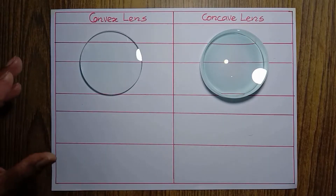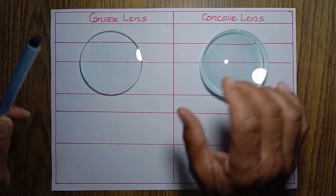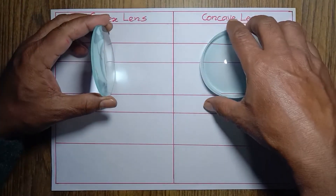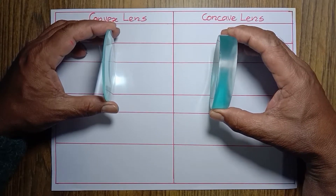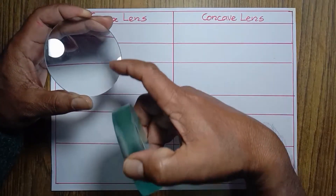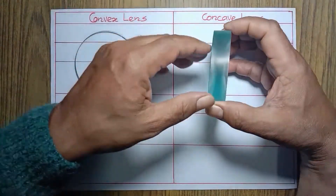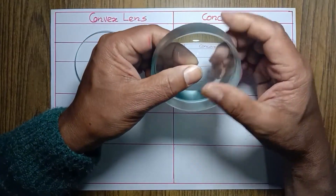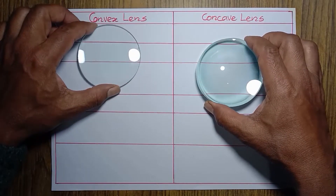Today we are going to differentiate convex lens and concave lens with different points. I have taken here a convex lens and this is a concave lens. The basic difference between these two in appearance is that a convex lens is thicker in the middle but thinner at the edge. But in the case of a concave lens, it is just opposite — thicker at the edge but thinner in the middle. This is the main difference between convex lens and concave lens.